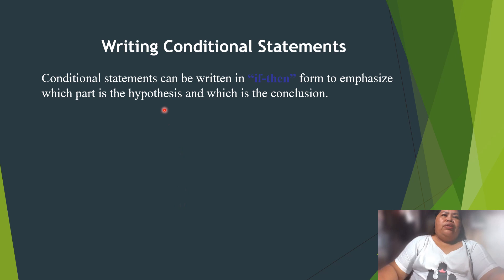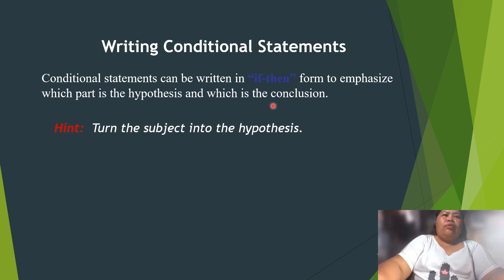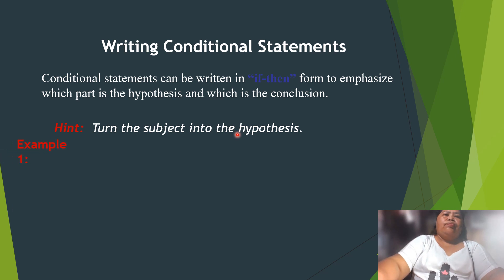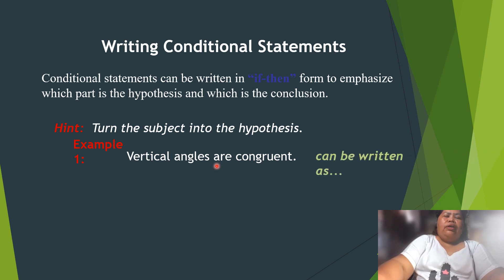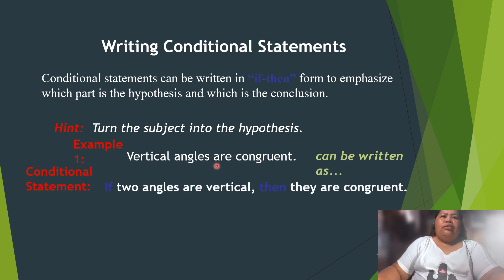In writing conditional statements, they can be written in if-then form to emphasize which part is the hypothesis and which is the conclusion. Turn the subject into the hypothesis. Example one: 'Vertical angles are congruent' can be written as: if two angles are vertical, then they are congruent.